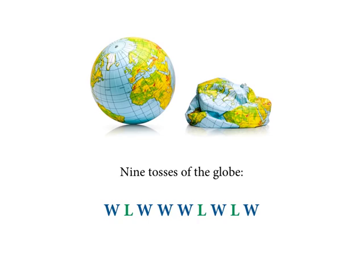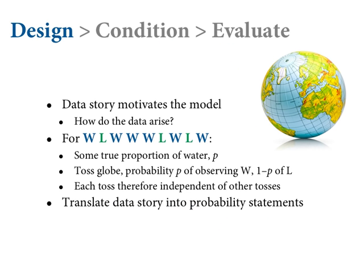Imagine we toss it nine times — we get this sequence where there are three land samples and six water samples. The question is how should we use this information to construct an estimate of the proportion of the globe covered in water. Think back to the model design cycle — we're in the design phase now. I'm going to outline this: design, condition, evaluation — give you an outline first, and then we're going to turn to each in some depth.